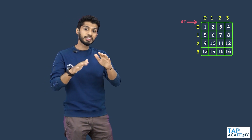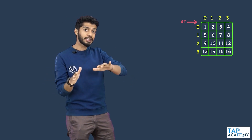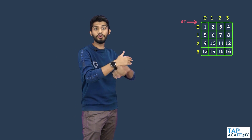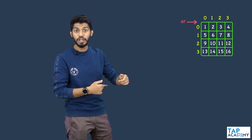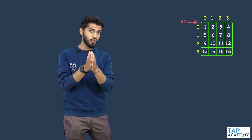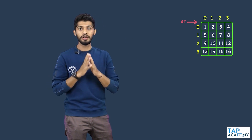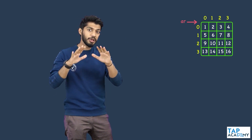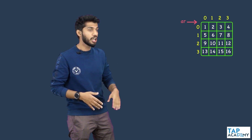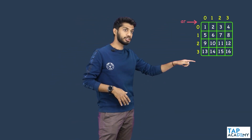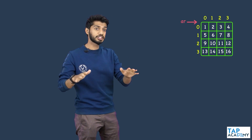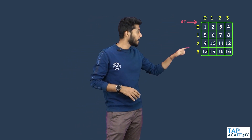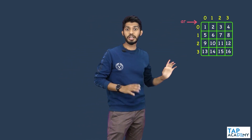Let us take it step by step. I will not directly write the final code — rather, I will write code for something else first and then convert it into the final output. Basically, I need to print all these elements but in a different order. So first, let us try to print all elements in the same order they appear in the matrix.